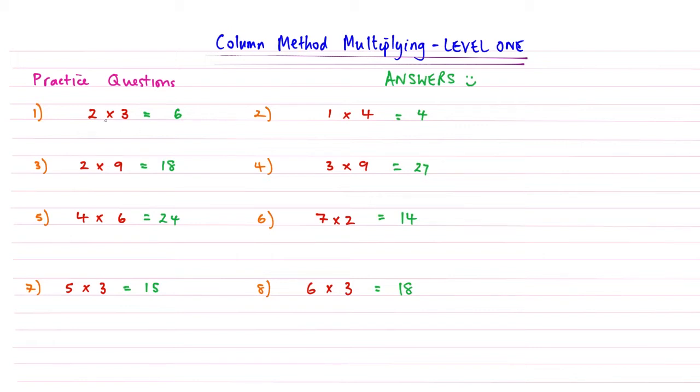So 2 times 3, simple little question here, they're both in the units column. Write them and make sure you line them up. Out of all the mistakes possible, it comes from not taking care with lining up your columns. 2 times 3 gives us 6, so we just multiply those.